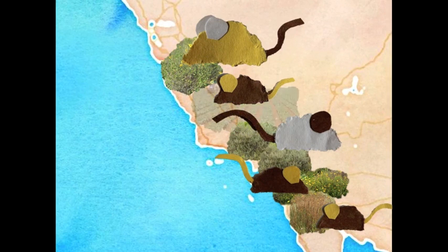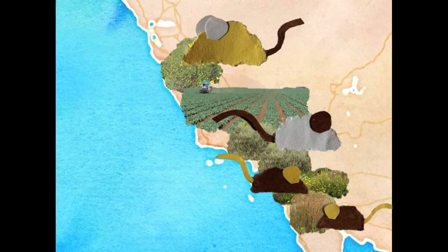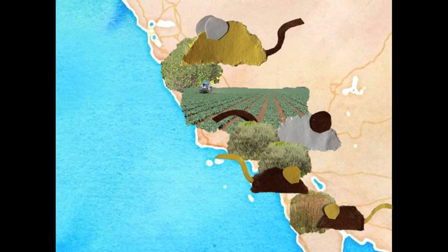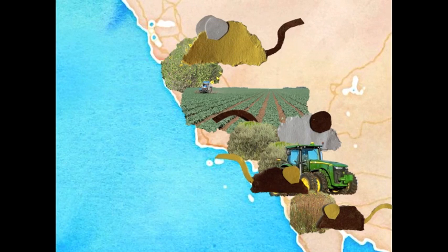Starting in the 1950s, development began in earnest in Southern California. Land was cleared for urban development and agriculture. Areas of coastal sage scrub were destroyed, and the habitat became more fragmented.